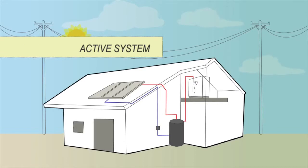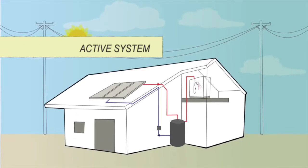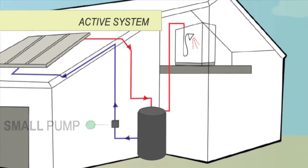Active systems use a small pump to move water between the collectors and the tank. The location of the tank can be within the roof or on the ground.